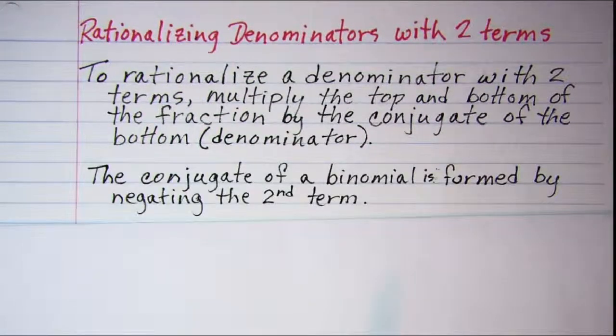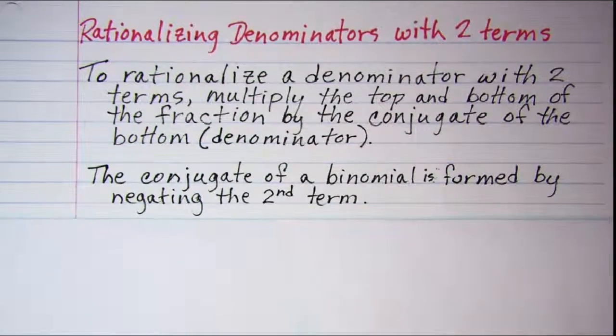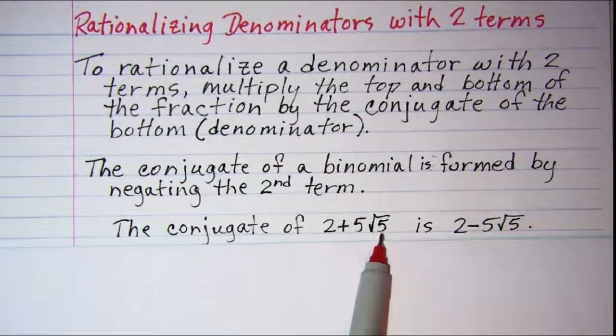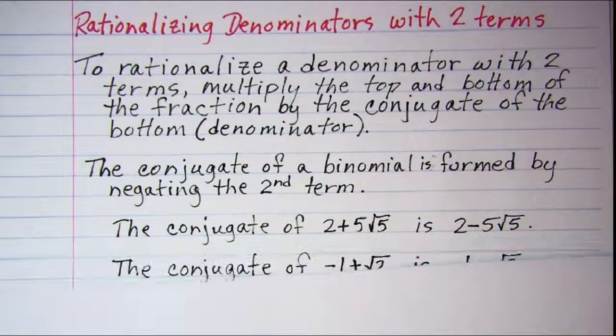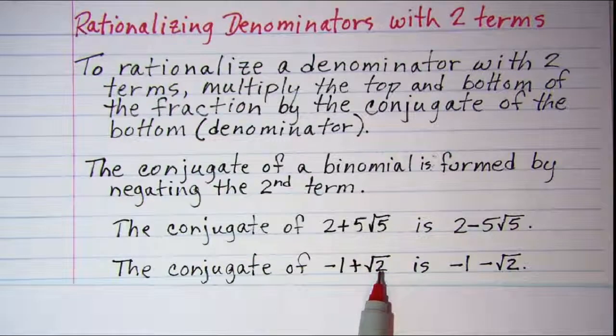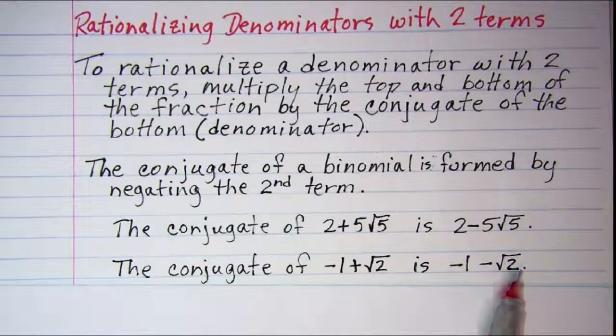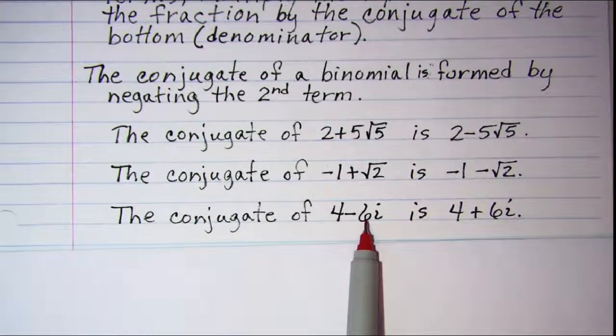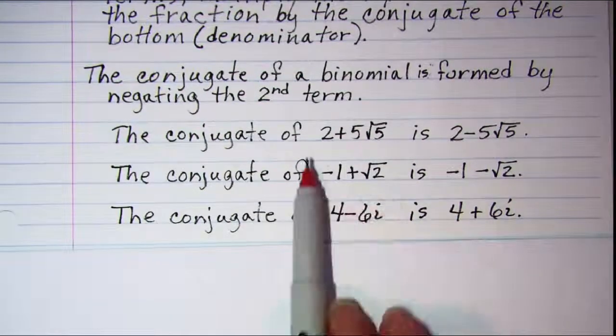The conjugate of a binomial is formed by negating the second term. The conjugate of 2 plus 5 root 5 is 2 minus 5 root 5. The conjugate of negative 1 plus root 2 is negative 1 minus root 2. The conjugate of 4 minus 6i is 4 plus 6i.